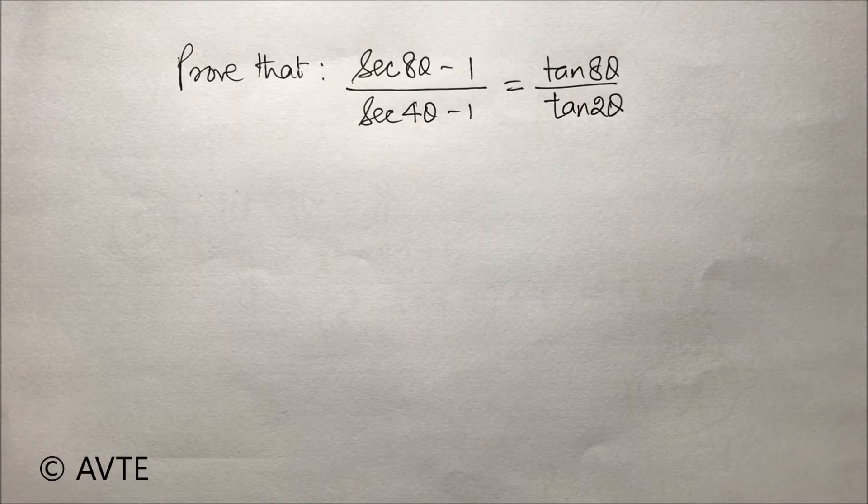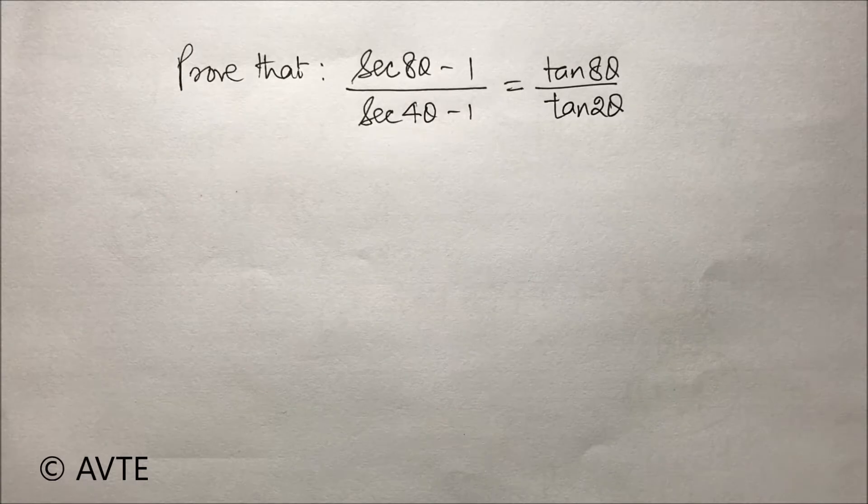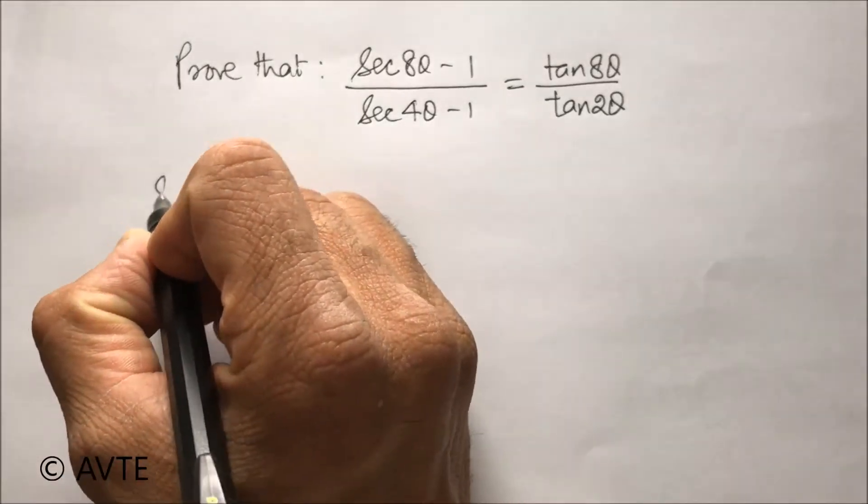And similarly in the denominator, secant 4 theta will be 1 by cos 4 theta and we'll be taking up the LCM in both cases.